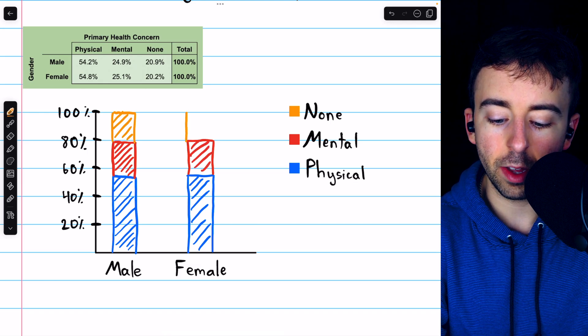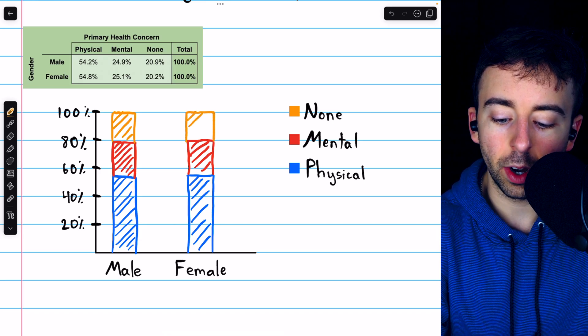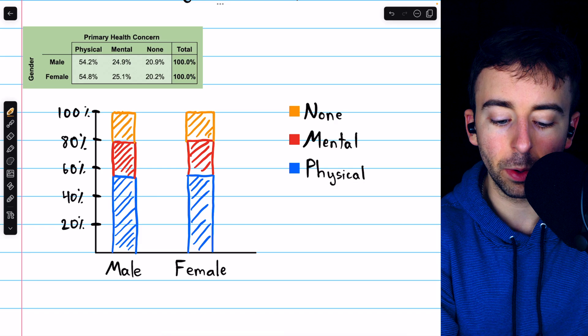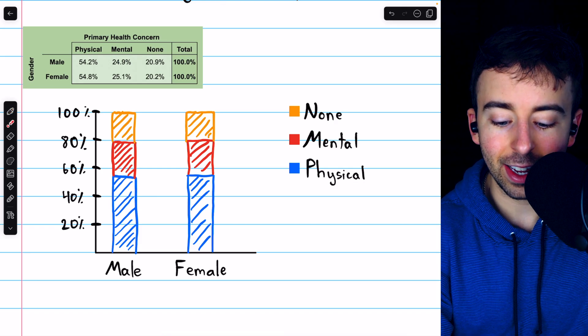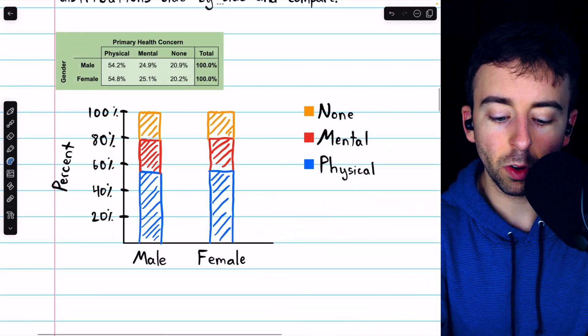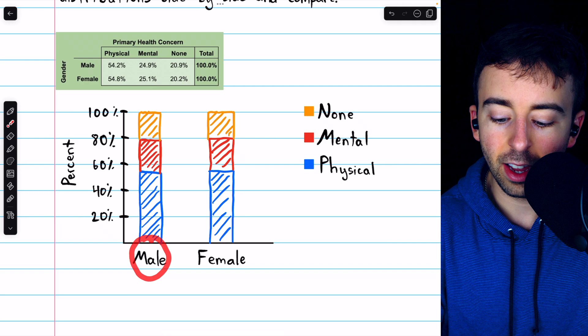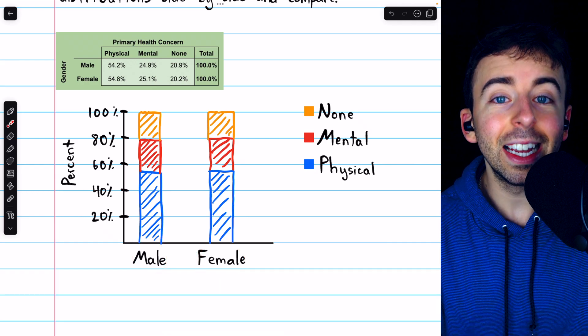And once again, the last category, the females who said they have no primary health concerns, that has to go up to 100% to make up the total number of females in the survey. And that is how we make a segmented bar chart. The last thing we might want to do is make sure we label that y-axis with percent. So that's representing the percents of each group.